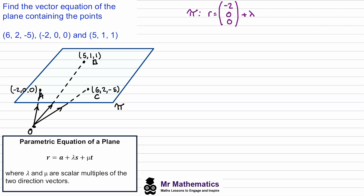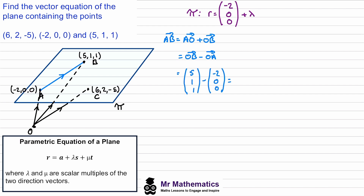We can find that direction vector by going from a to b. We get from a to b by going from a to the origin and then from the origin to b. We know a to origin is the same as negative origin to a, so we can simplify this as origin-to-b minus origin-to-a. Substituting in the two position vectors gives us the components — this will be our first direction vector s, which we substitute into our equation.